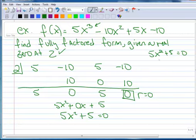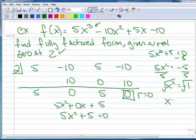I want to solve for my remaining two zeros. So we're going to subtract 5 from each side, so we have 5x squared equals negative 5, divide both sides by 5, we get x squared equals negative 1, then we take the square root of each side, and we get x equals plus or minus the square root of negative 1, and you recall that the square root of negative 1 is i, so we have plus or minus i.